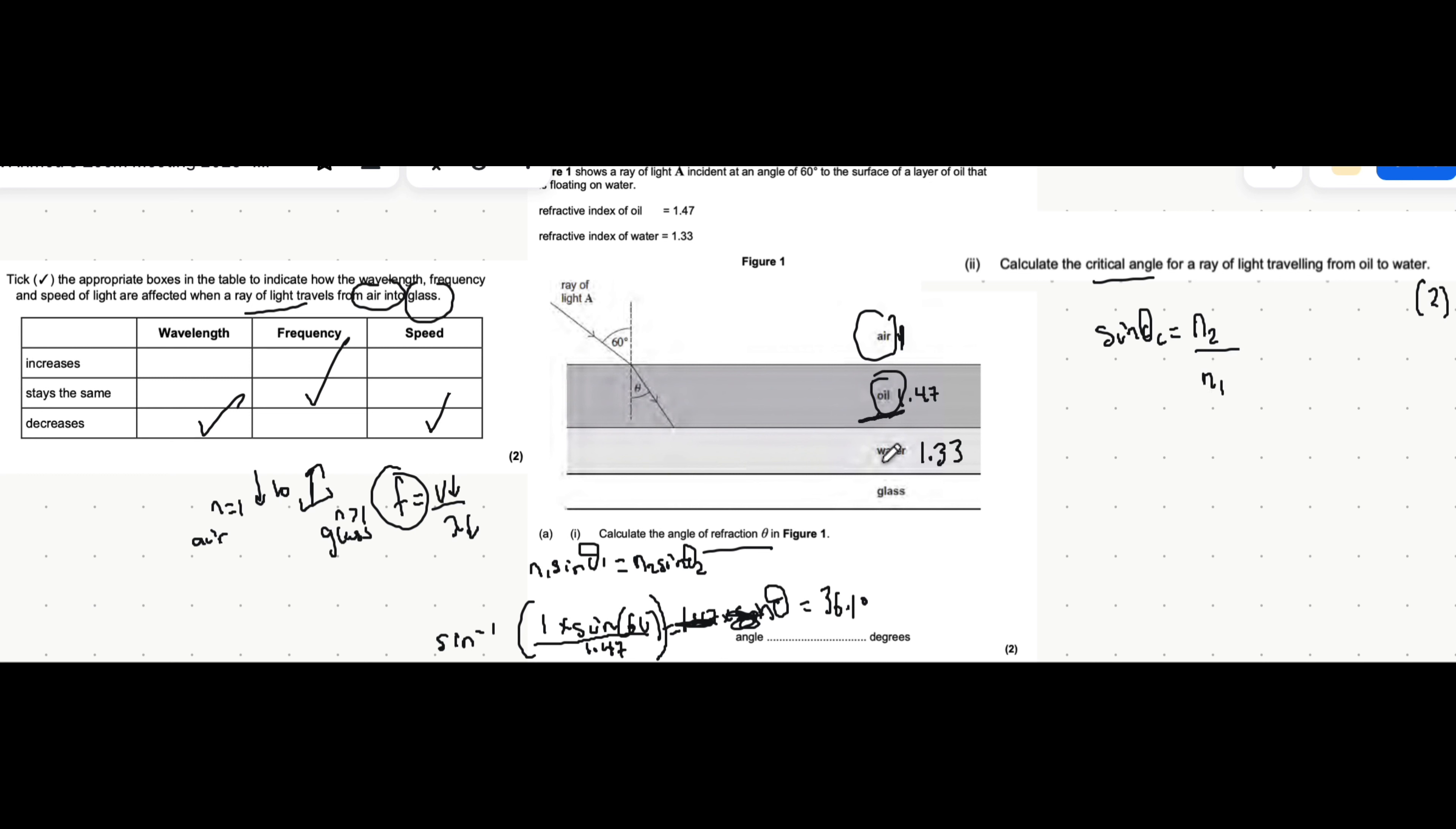So we're going from oil to water. N2 is the refractive index of where light is going towards. N1 is the refractive index of where light is coming from, which in this case is from oil to water. So in this case, sine of the critical angle is equal to N2, which is 1.33. I'm just going to write this out. This subscript of C just means that it's a critical angle. And we're dividing by the refractive index of oil, which is 1.47.